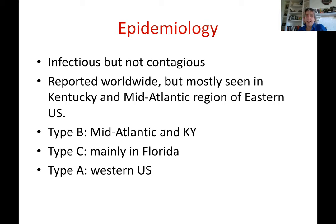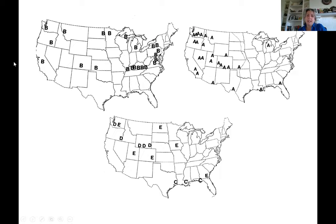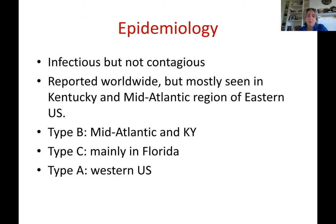Botulism is infectious but not contagious. It is reported worldwide but is very commonly seen in the United States. In Kentucky, type B toxin is prevalent — a soil study collected samples across the U.S. and every Kentucky sample was positive for type B. Type A was more common in the western part of the country. Type C is generally associated with feces of animals and is also something to consider.